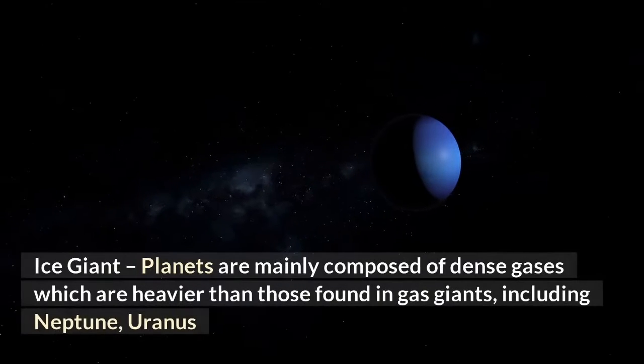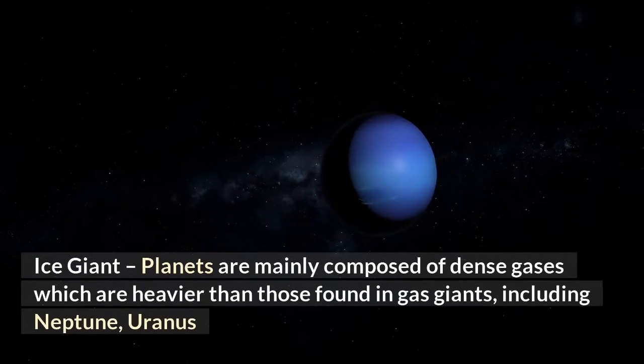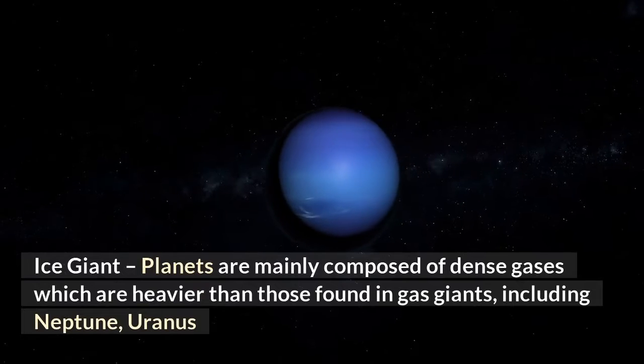Ice giants: planets are mainly composed of dense gases which are heavier than those found in gas giants, including Neptune and Uranus.